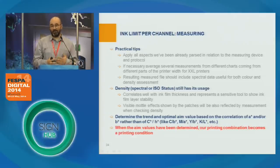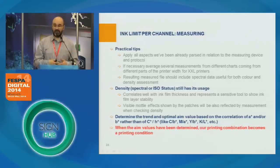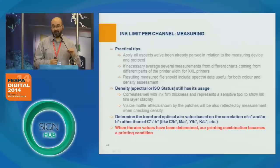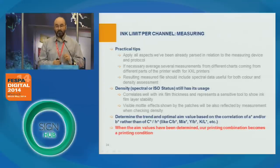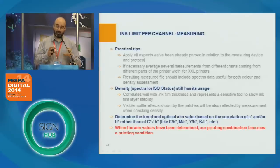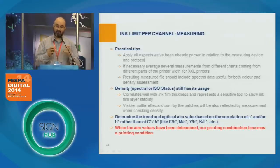In digital printing we don't rely heavily on density since all our control and color management is based on colorimetry. But density — whether isostatus density or spectral density — still has its usage, because it is a very good indicator of how the ink film thickness is behaving in relation with the substrate. If you are having high ink intake variation with density going up and down, that's a good indication that you have reached the saturation in terms of how much ink that substrate can hold.